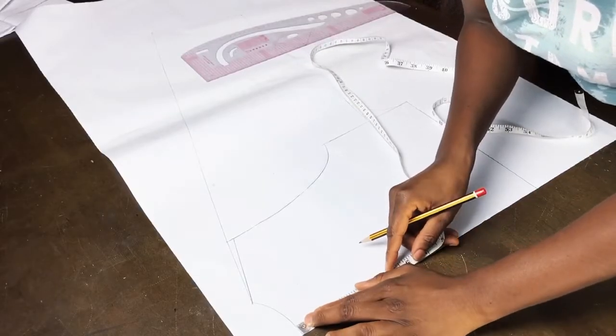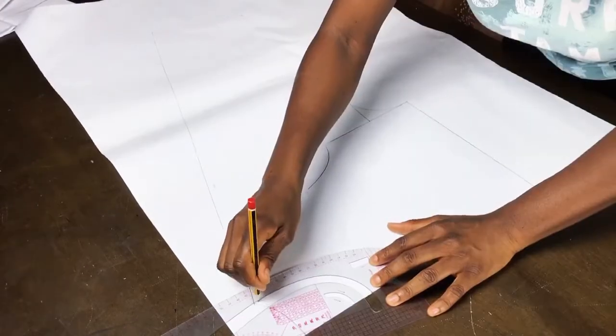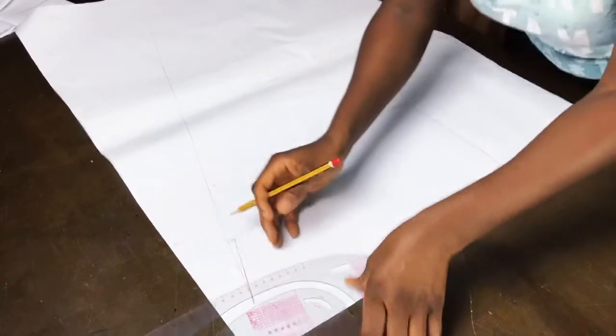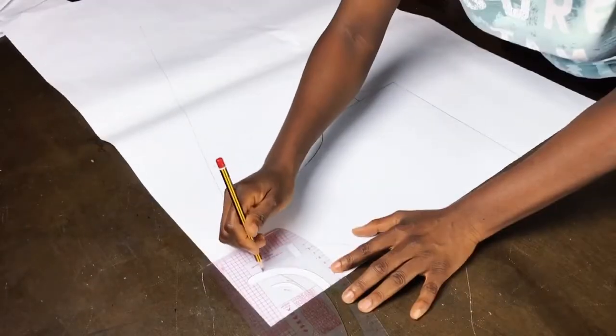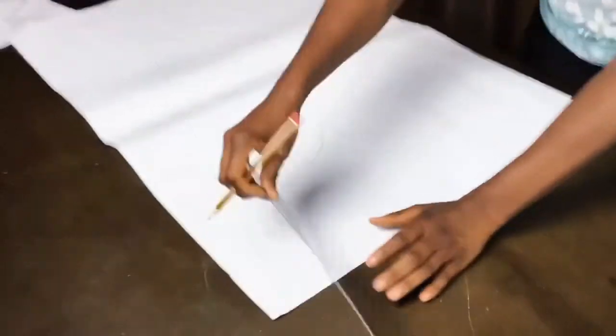Next lower the neck depth. For me I went down by 3.5 inches and then I bled back into the neck point. Also you need to lower the neck depth of the back because if you use it this way then it's going to be too high at the back.